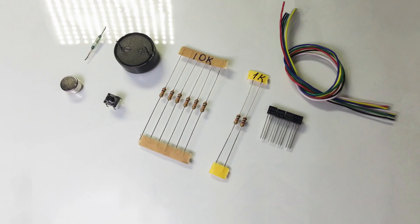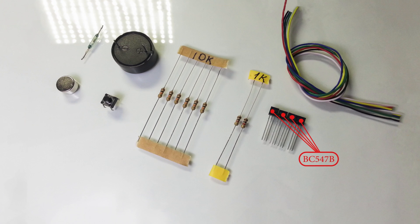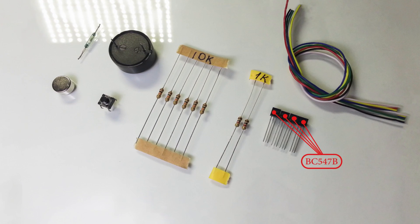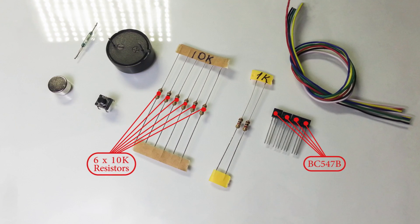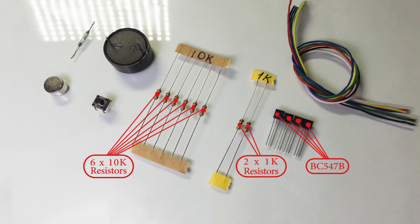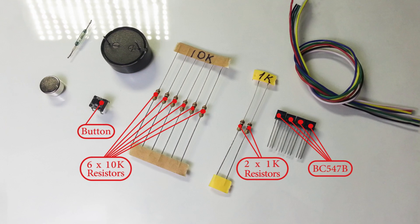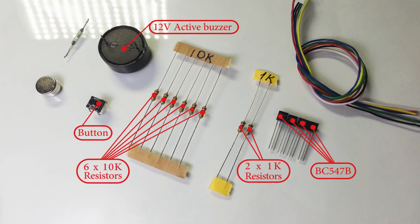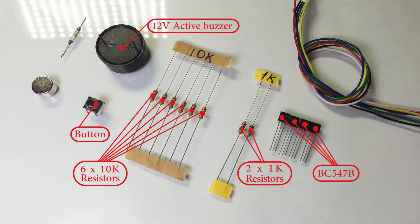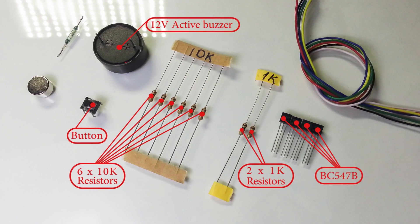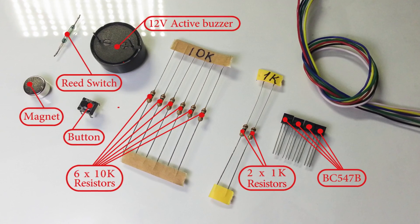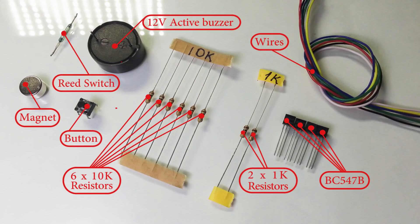For building such alarm device we'll need 4 transistors BC547B, 6 10kΩ resistors and 2 1kΩ resistors. Also we'll need a small button for reset and an active 12V buzzer. For triggering this alarm I will use a reed switch and a magnet. Also we'll need wires.